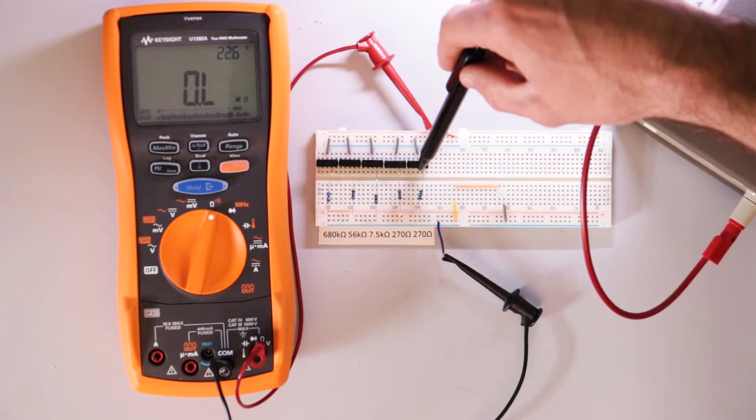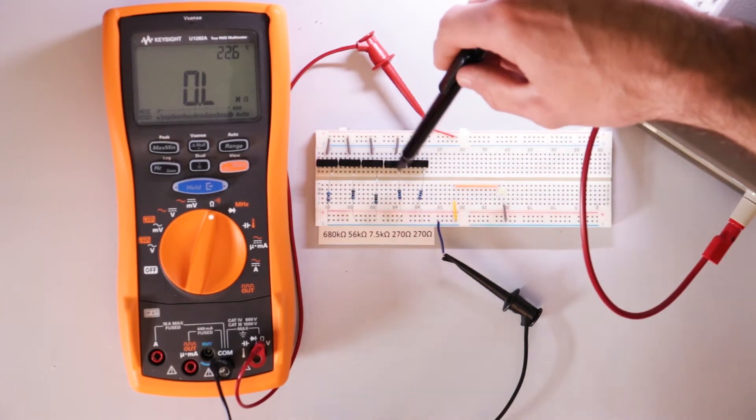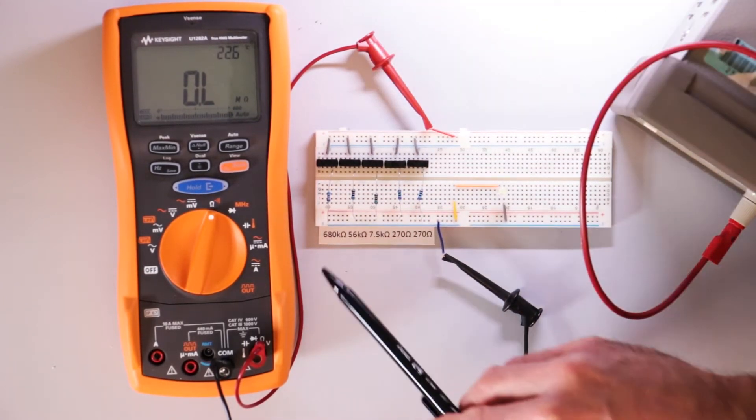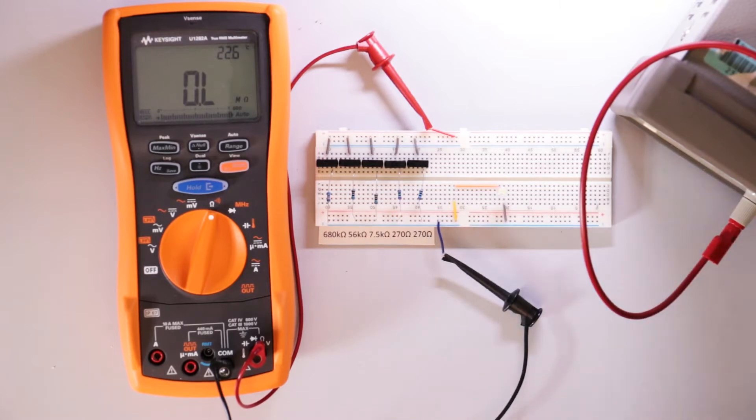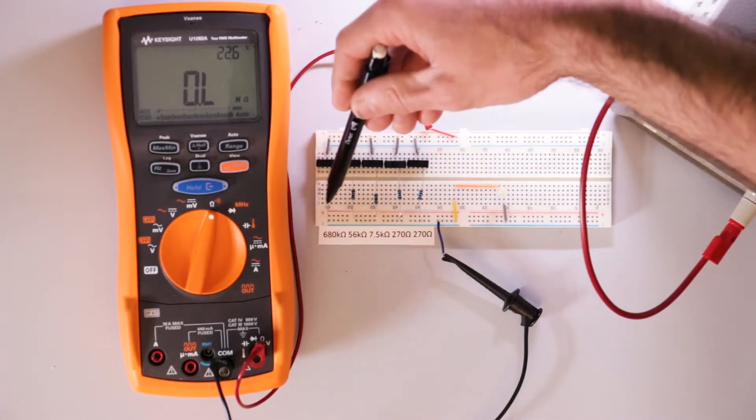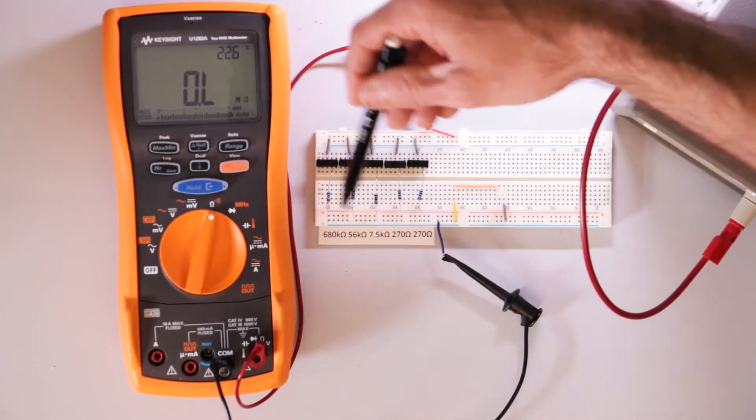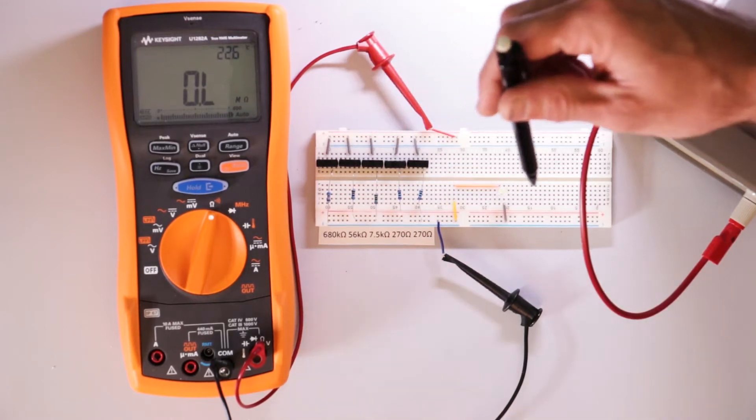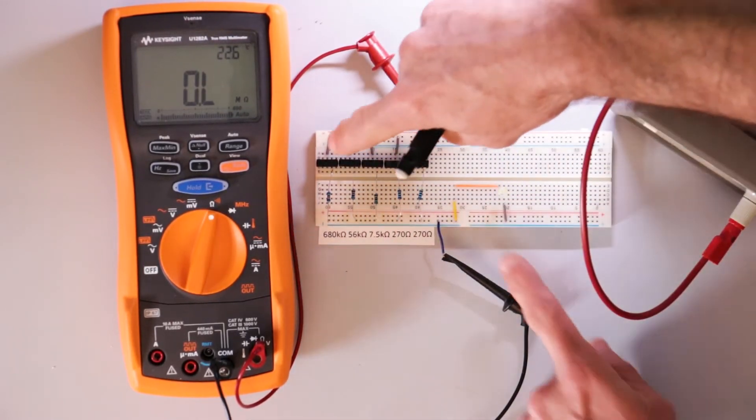These resistors are connected, tied together by the switches here, and the bottom resistors are tied together. The switch just allows me to put each individual resistor in the circuit. So let's start with the first one here, 680.